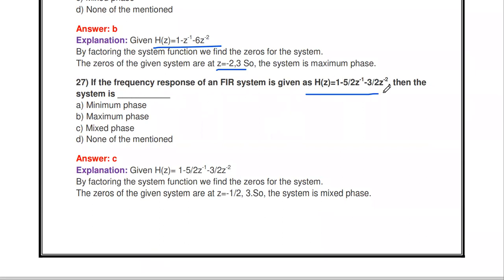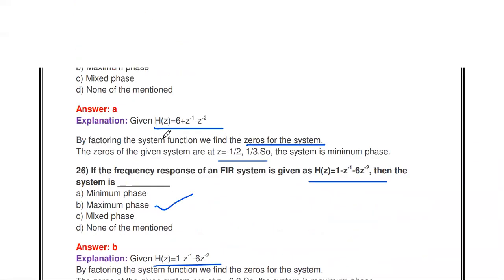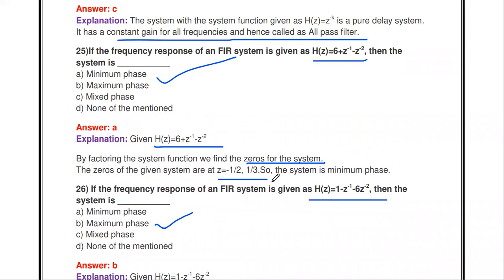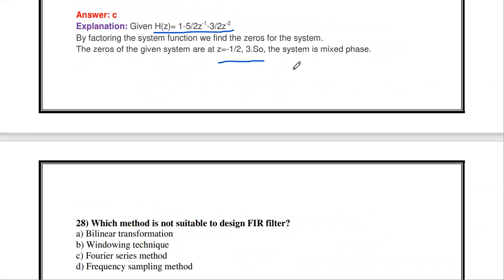If H(Z) = 1 - (5/2)Z^(-1) - (3/2)Z^(-2), factorizing gives zeros of -1/2 and 3. One root has magnitude less than one and one has magnitude greater than one, so the system is mixed phase. Mixed phase means some zeros are inside and some are outside the unit circle.